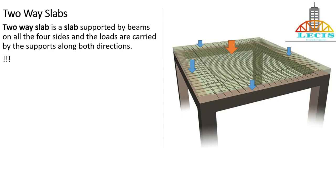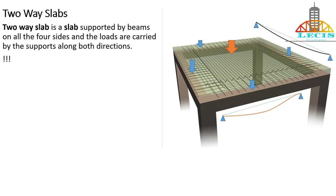Here the slab is supported by these four beams, so slab loads are transferred to all beams. If I make a line diagram, these two triangles represent the two beams acting as supports and the line represents the slab. The loads are transferred to these beams and there will be certain support reactions. Since there are support reactions and loads on this span, the span bends. Similarly, in the other direction, loads are also transferred and there is bending in the slab in that direction as well.